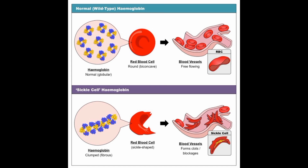However, people with HBSC can still experience a range of complications, including pain. People with HBSC can experience episodes of pain similar to those seen in HBSS, but the pain is often less severe and less frequent. HBSC can also cause anemia, a condition in which the body does not produce enough red blood cells, which can cause fatigue, weakness, and shortness of breath.